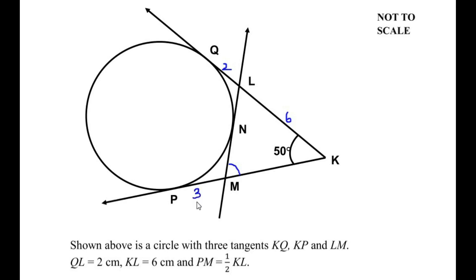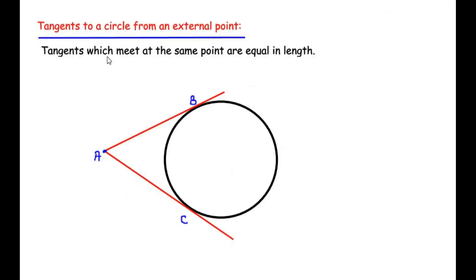To find the value of angle LMK, let us first understand a theorem related to tangents to circles. The theorem is: tangents to a circle from an external point are equal in length. I have drawn a circle with an external point A, and through this point two tangents AB and AC are drawn. The theorem states that tangents meeting at the same point are equal, so if AB is 6 centimeters then AC is also 6 centimeters.